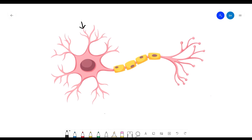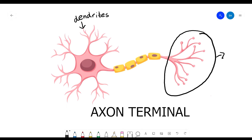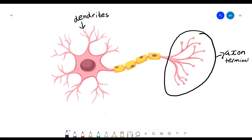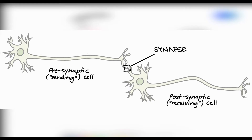Right here we've got dendrites. Dendrites connect to the axon terminals of other neurons. The axon terminal houses many neurotransmitters, which are chemicals that neurons use to communicate with each other. This is where a synapse happens — a synapse is where the dendrite of the receiving neuron and the axon terminal of the sending neuron are very close together, with a small gap between them, and an impulse is sent between the two neurons.